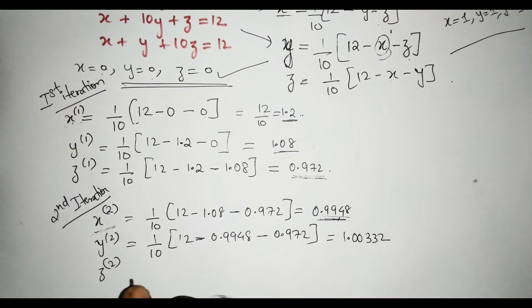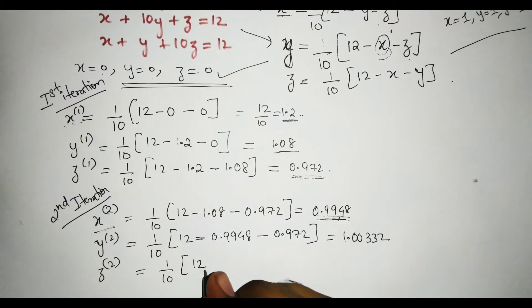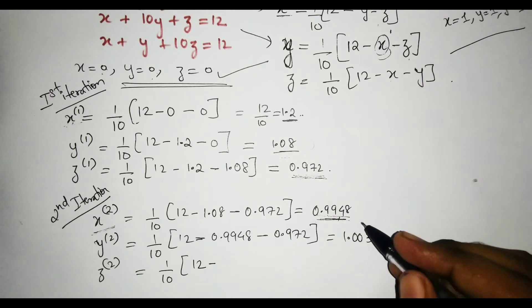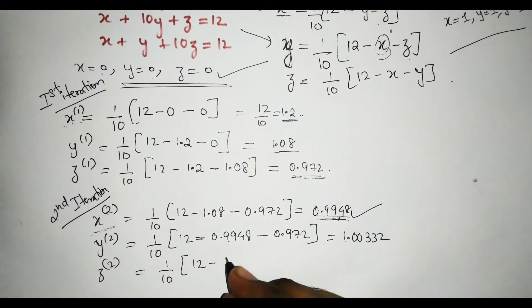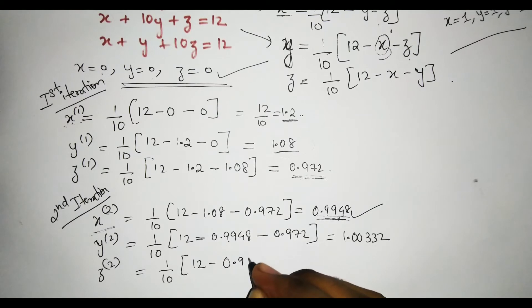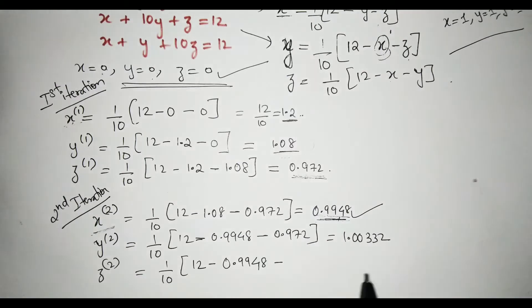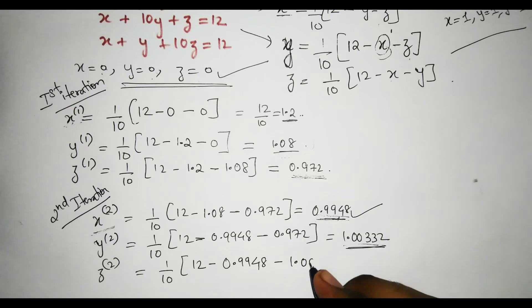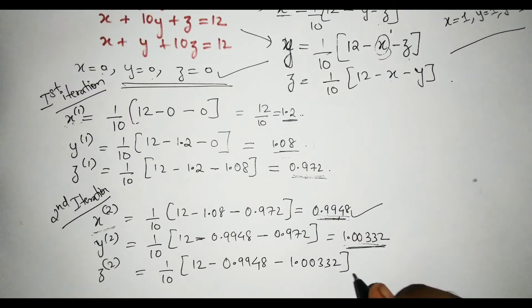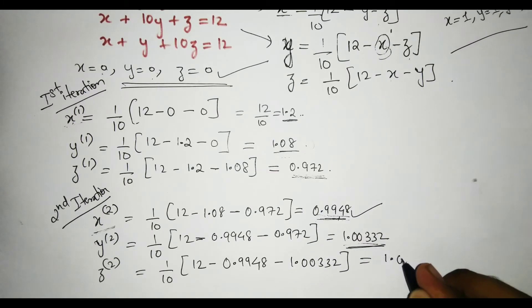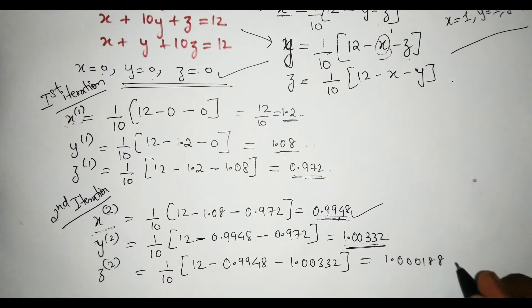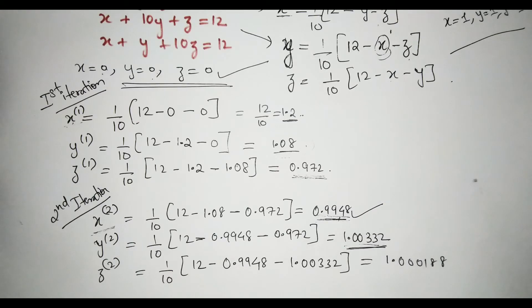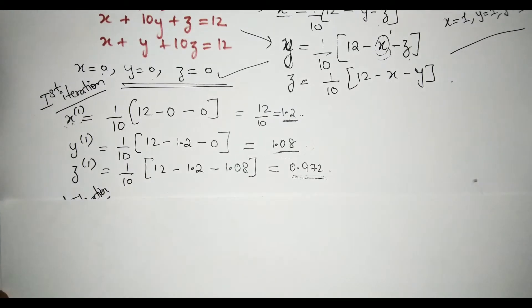For z₂ in the second iteration: z₂ = (1/10)(12 − x − y). The latest x value is 0.9948 and the latest y value is 1.00332, so z₂ = 1.000188. Always remember to use the latest value you have obtained for each variable as you proceed through the equations.